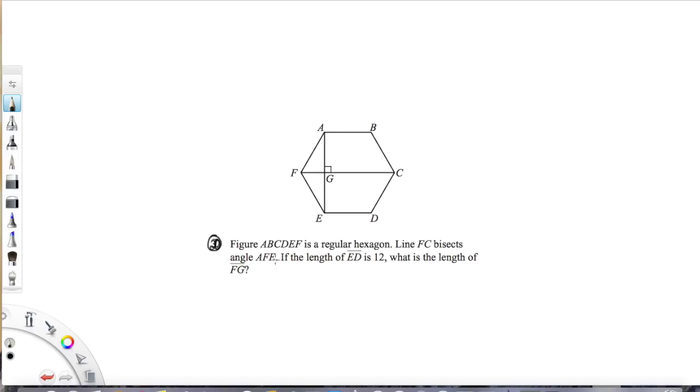Okay, let's look at it. So figure ABCDEF is a regular hexagon, line FC bisects angle AFE, and the length of ED is 12. What is the length of FG? Okay, so let's label what we know. This is 12, we know that nice.